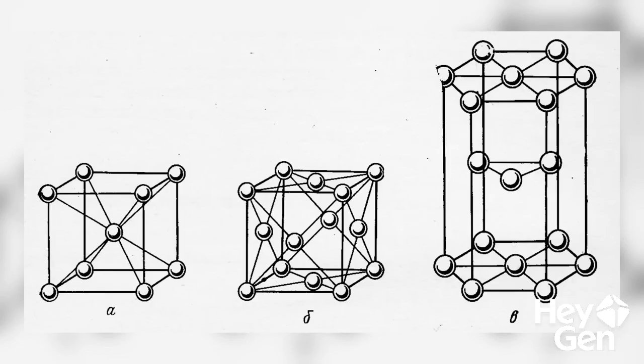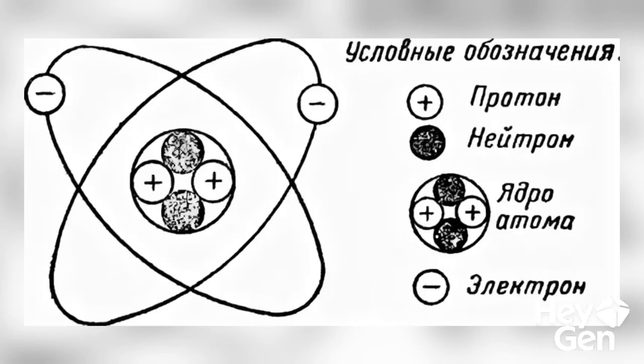The most important trigger we need to use here, and the main thing we should look at, is the structure of the material. That very strange piece of mysterious iron we're looking at, which has these properties, also has a structure. This structure contains certain atoms that are arranged in a specific way, and these atoms also have a certain composition.